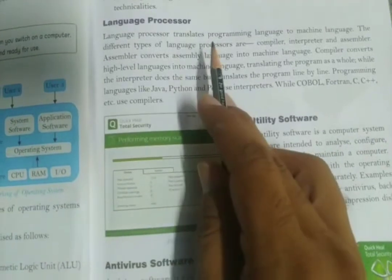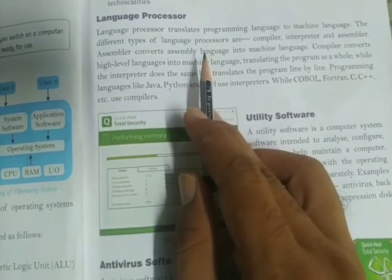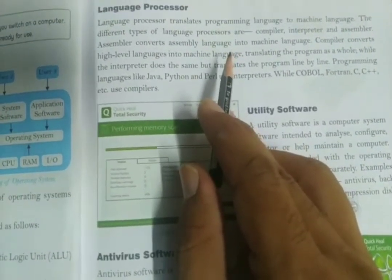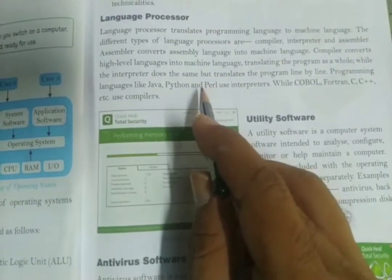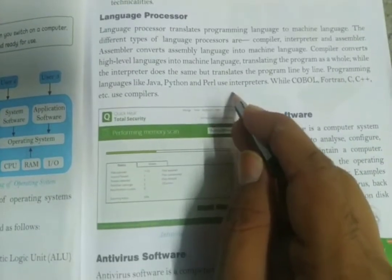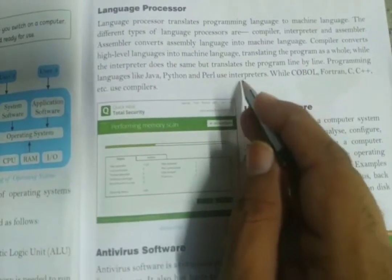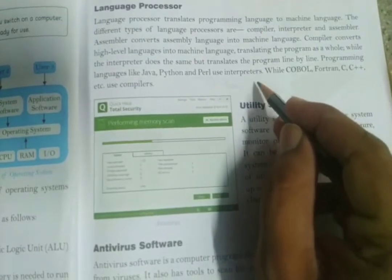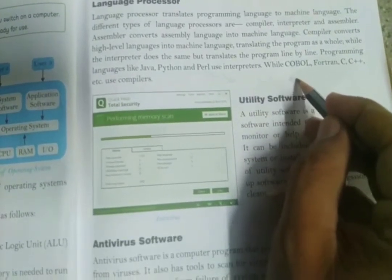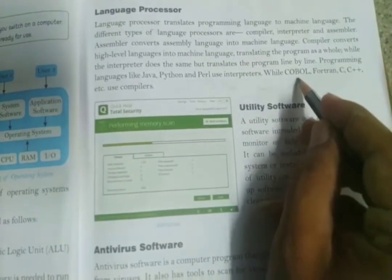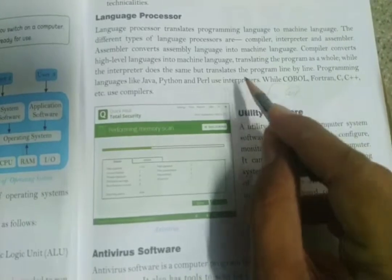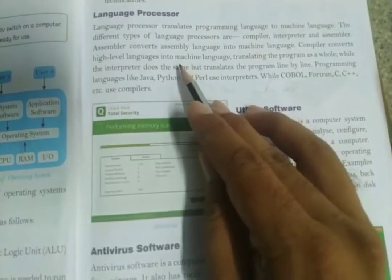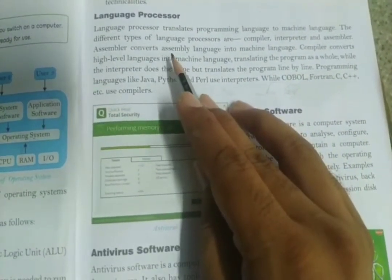The second system software is the language processor. Languages like Logo, Basic, or Scratch are all high-level languages. However, computers do not understand English code, so we need a program that translates this English code into machine-understandable form — meaning 0s and 1s — and also translates machine instructions back to high-level language. Programs used for this conversion are called language processors.